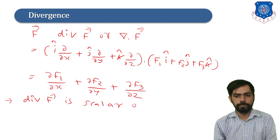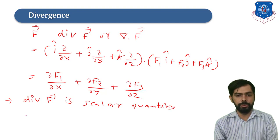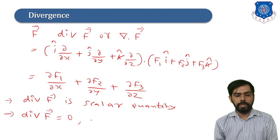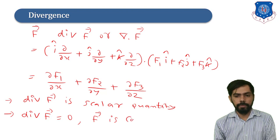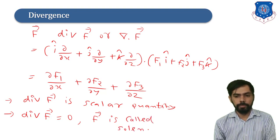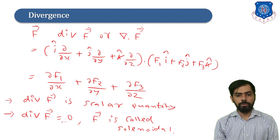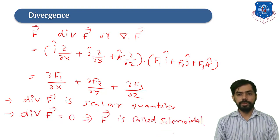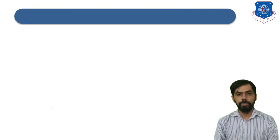If divergence of f is equal to 0, then the vector field f is called solenoidal. Now let us discuss examples related to divergence.